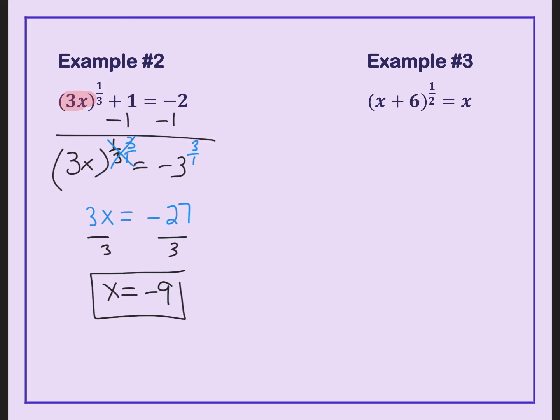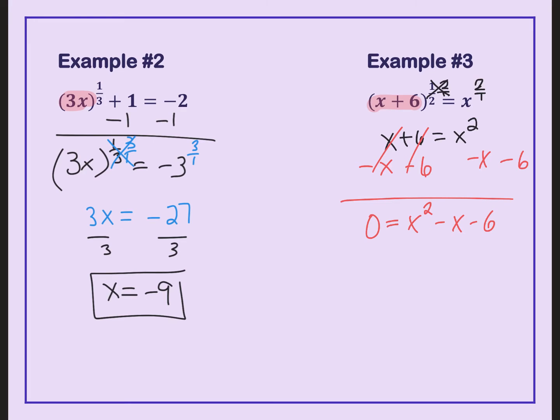Let's try example number 3 together. It's already by itself — I already have the one-half power isolated. So I'm going to multiply this side by 2 over 1. The reason I multiply by 2 over 1 is because I want the one-half to be eliminated. But if I multiply one side, I must multiply the other. I now have x plus 6 equals x squared — back to a quadratic. Go ahead and move everything to one side.